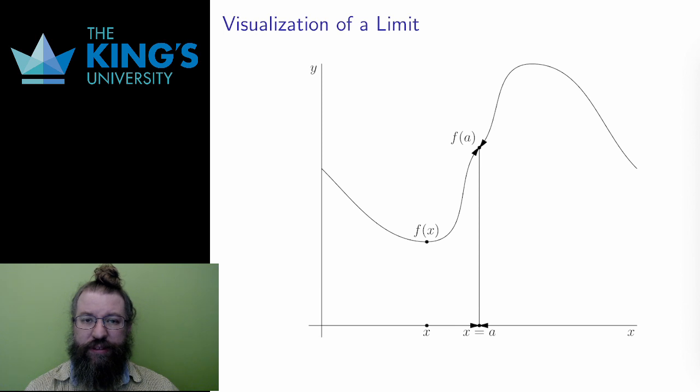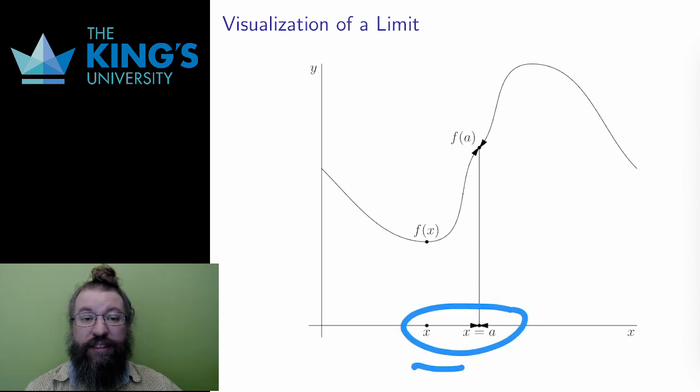What does this look like? Here is the graph of a function. X approaching a happens on the x-axis, the input axis. A is some fixed point, and I think about the process of getting closer and closer to that fixed point. Then, as that is happening, I look at the function. What is the function doing?